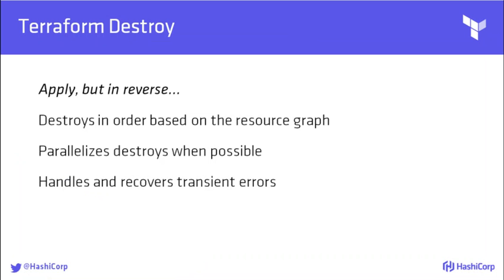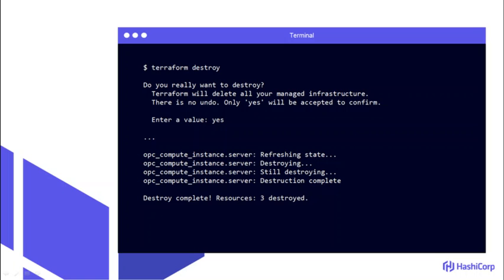Once we are ready to destroy our resources, we perform a Terraform destroy. Similarly to Terraform apply, Terraform destroys all resources in the necessary order, destroys appropriate resources in parallel, and handles any known provider errors. It is important to know that you can see a plan of the destroy prior to running it by running 'terraform plan' with the destroy option. During the destroy prompt, the user has to type the full word 'yes' in order to destroy the resources. This is to help ensure that no infrastructure is accidentally destroyed, causing any adverse side effects.